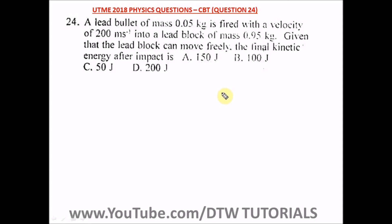Question 24 of the UTME 2018 physics past questions. It says: a lead bullet of mass 0.05 kg is fired with a velocity of 200 meters per second into a lead block of mass 0.95 kg. Given that the lead block can move freely, find the final kinetic energy after impact.